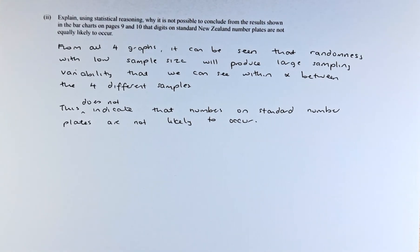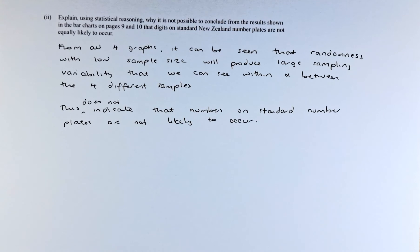So explain using statistical reasoning why it is not possible to conclude from the results shown in the bar charts, the previous Student 1, 2 and 3 on pages 9 and 10, that digits on standard New Zealand number plates are not equally likely to occur.